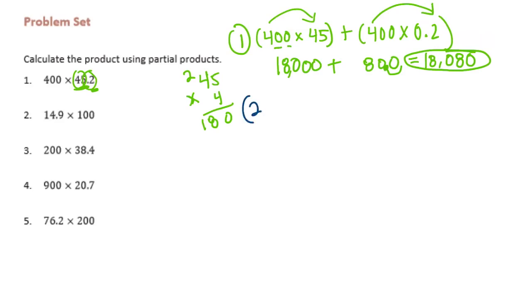Number 2, 14.9 times 100. So I'm going to use partial products to change 14.9 into 14 and then 0.9. So let's do 100 times 14 plus 100 times 0.9. So 100 times 14 would be 14 with 2 zeros, 1,400.